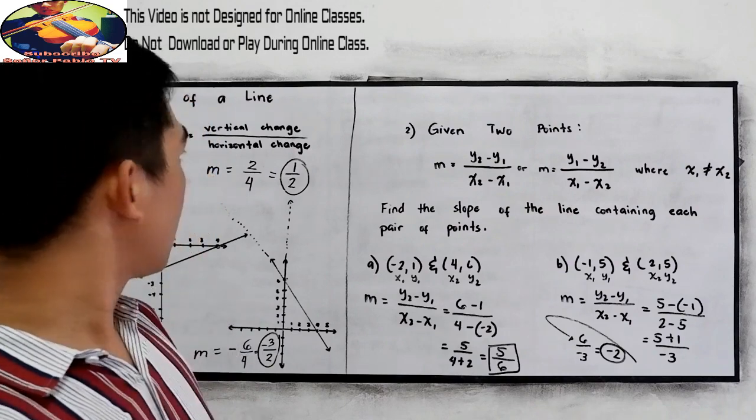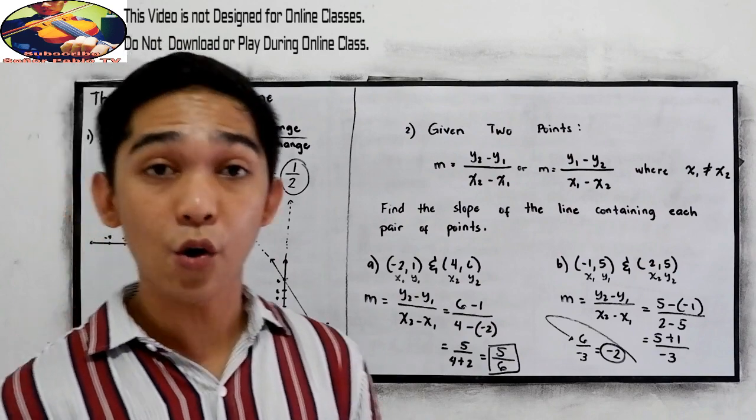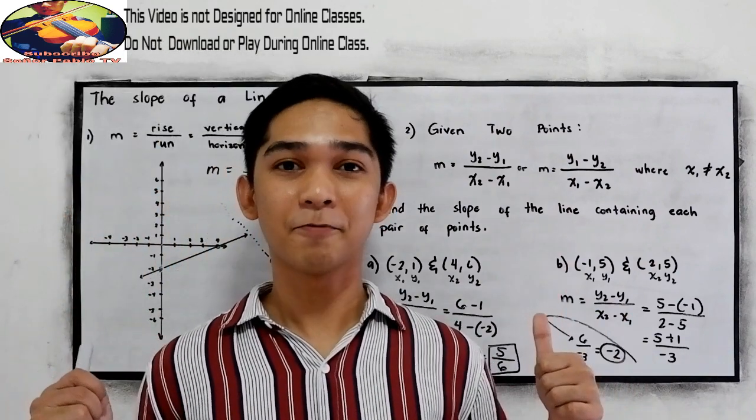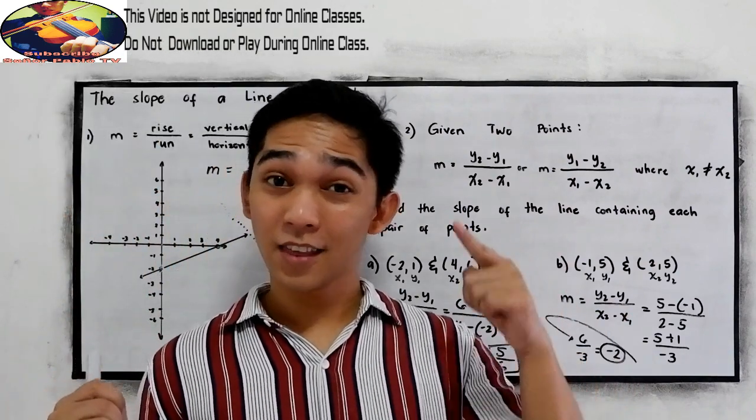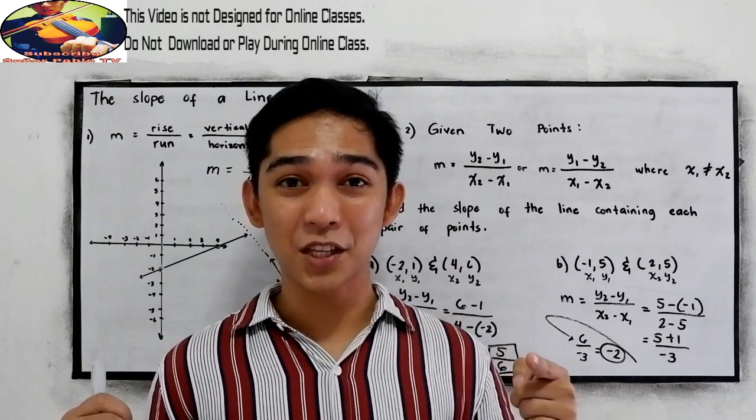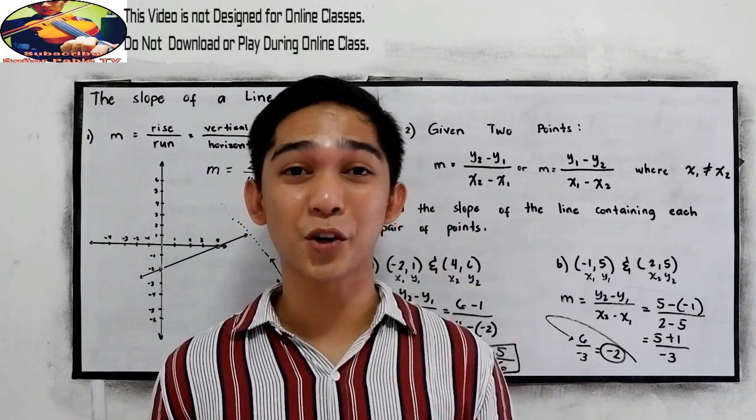So those are the 2 ways to find the slope of a line. Thank you for watching Senior Pablo TV and now you are ready to answer your modules.